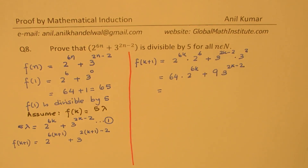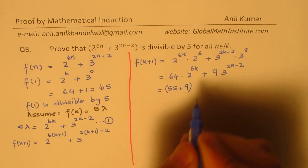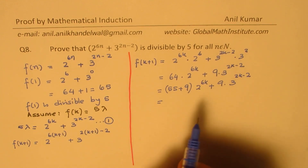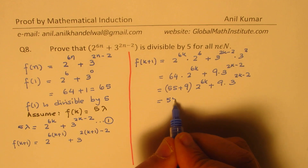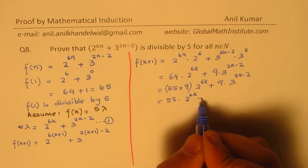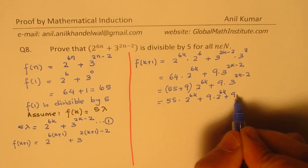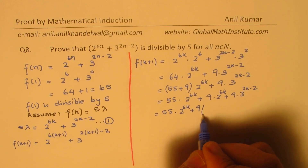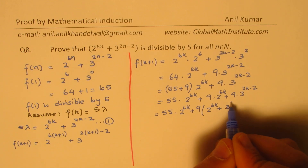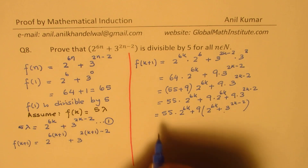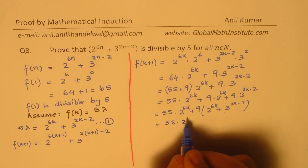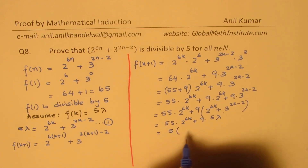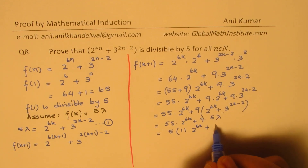Now 64 can be written as 55 plus 9, giving us 55 plus 9 times 2 to the power of 6k plus 9 times 3 to the power of 2k minus 2. We write one term as 55 times 2 to the power of 6k, where 55 is a multiple of 5, plus 9 times (2 to the power of 6k plus 3 to the power of 2k minus 2). This inner term is 5 lambda, so we get 55 times 2 to the power of 6k plus 9 times 5 lambda, and taking 5 as a common factor gives us 5 times (11 times 2 to the power of 6k plus 9 lambda).